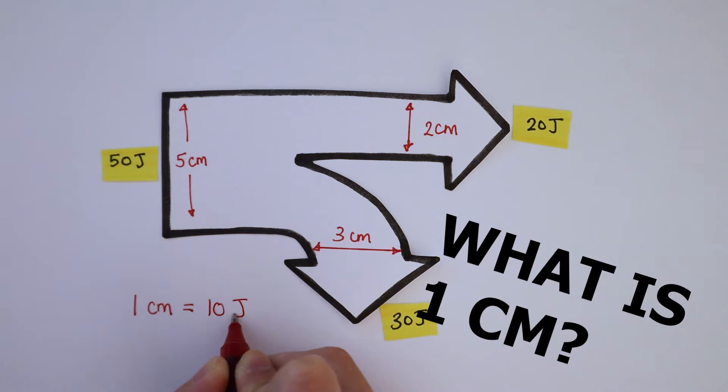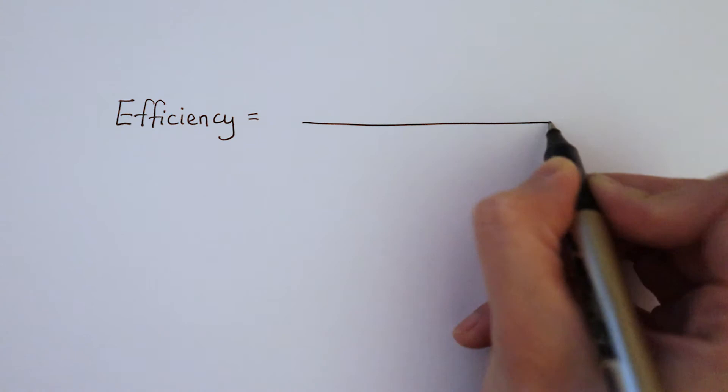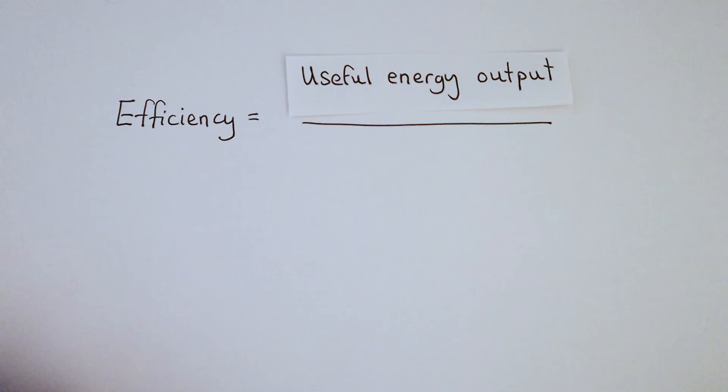Given all this information, now how do we calculate the efficiency of this light bulb? We have to use the equation: efficiency is equal to the useful output energy divided by the total input energy. And then turning all this into a percentage, we have to multiply by 100.